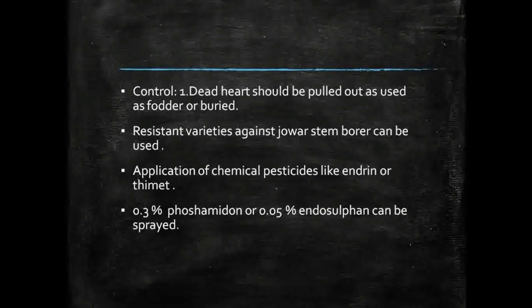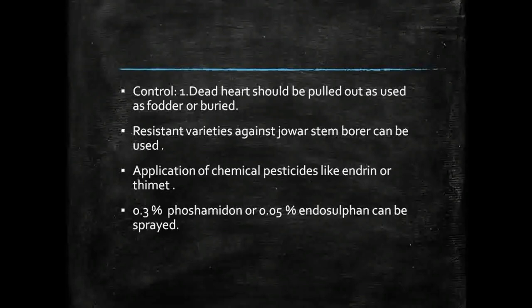Moving to control measures. One of the easiest methods is to remove the dead heart — pull it out and use it as fodder or bury it, so that any larva, caterpillar, or pupa present inside is destroyed and cannot spread further.